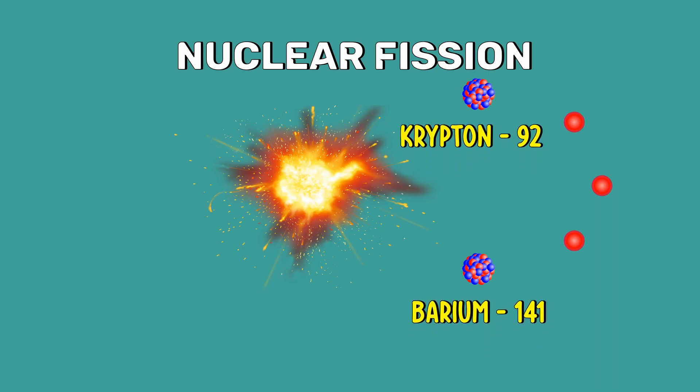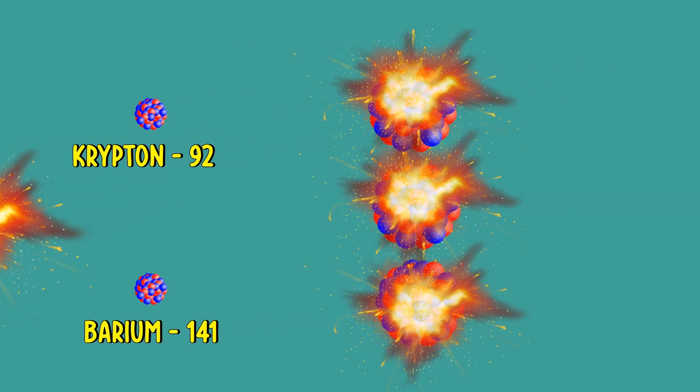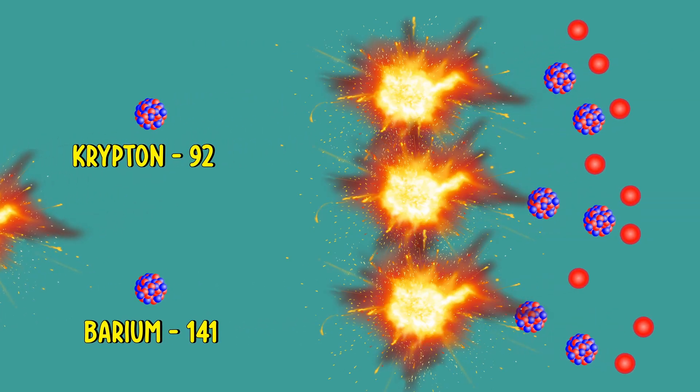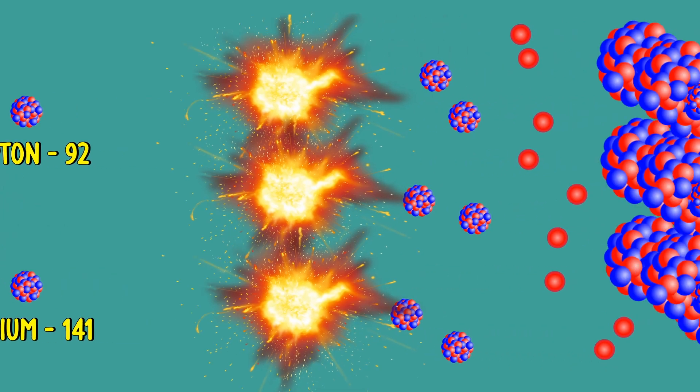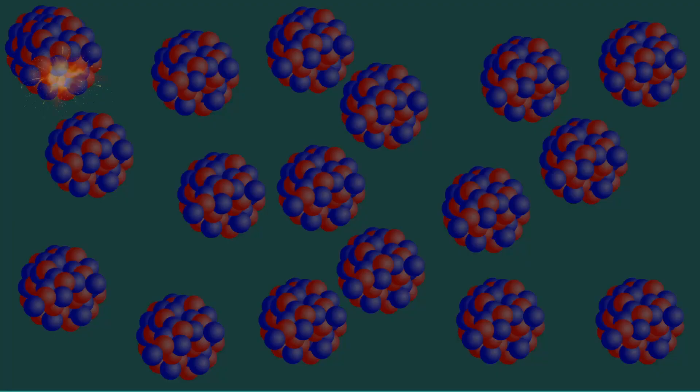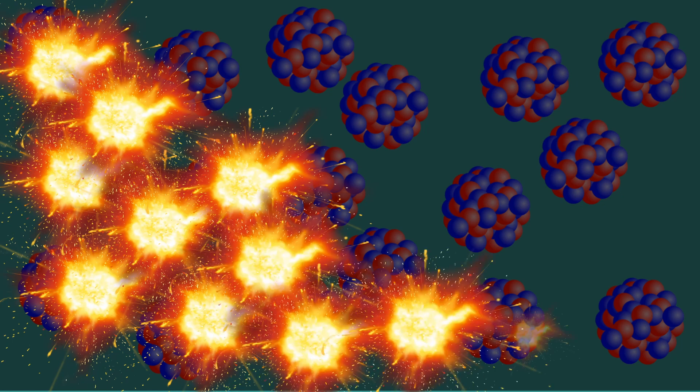Along with these two atoms, three free neutrons are also produced during this fission process. These free neutrons split up some more atoms, which in turn releases more neutrons. This process continues again and again throughout the reaction material.